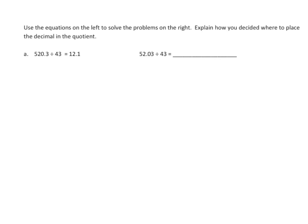This is very similar to the previous one. We have the same divisor once again. Looking at the dividends, they have the same digits but they're in different places. This dividend is 10 times the other, so we're basically going to use the same strategy — except it's even easier this time because they give us the quotient. If this is 10 times greater, all we have to do is divide our quotient by 10: 12 and one-tenth divided by 10. We move our digits one place to the right, which results in the decimal going one place to the left, and we have one and twenty-one hundredths.